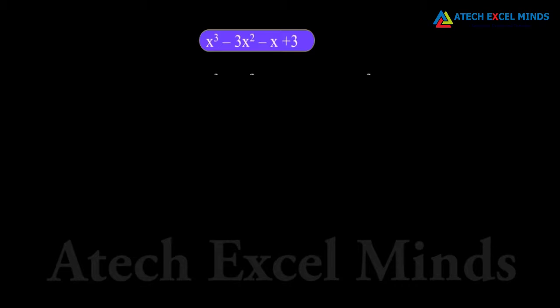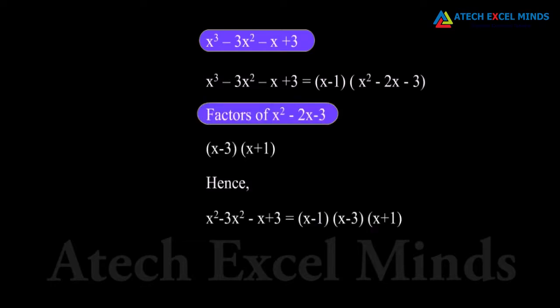Yes, we can do that. If 1 is a zero of this polynomial, then x minus 1 is a factor of this polynomial. Upon dividing this polynomial by x minus 1, we get x square minus 2x minus 3.